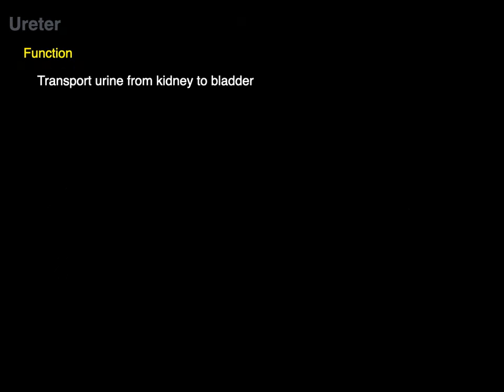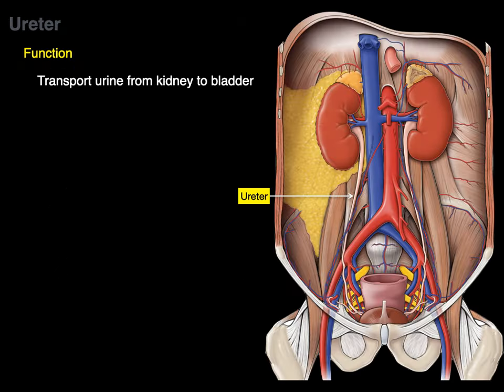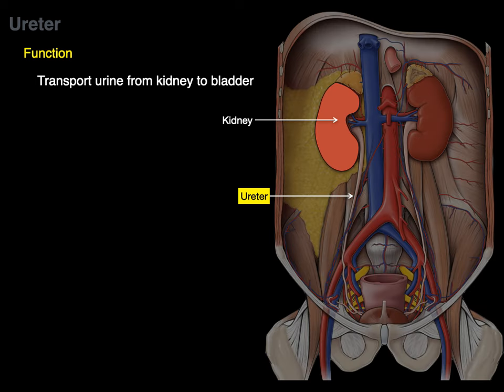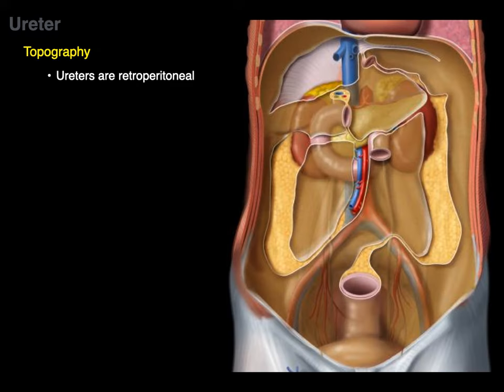The ureter transports urine from the kidney to the bladder. In this coronal section, we have the ureter identified. The kidney filters blood plasma into filtrate, which is excreted as urine, and the ureter transports that urine from the kidney down to the urinary bladder. The ureters are also retroperitoneal, which means behind the peritoneum.